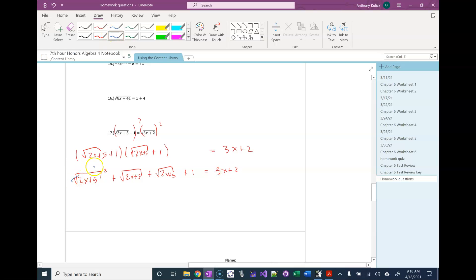Now, the square cancels the square root here. So we have 2x plus 5. And then square root 2x plus 5 plus square root 2x plus 5 is 2 square root 2x plus 5. And then I still have the plus 1.